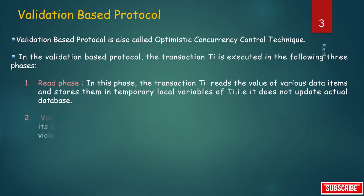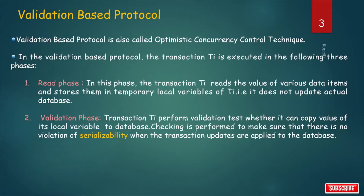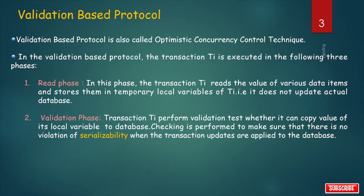The next phase is the validation phase. Here, transaction TI performs a validation test to determine whether it can copy the value of its local variable to the database. Checking is performed to make sure that there is no violation of serializability when the transaction updates are applied to the database. So before any update, serializability will be checked.